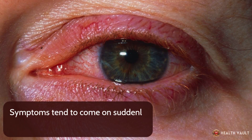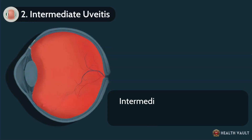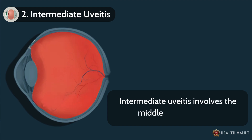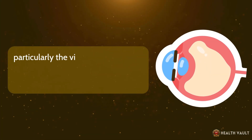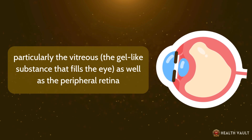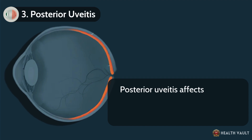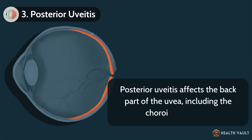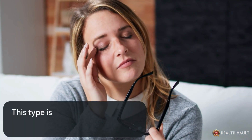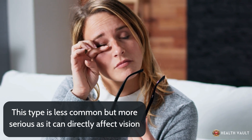Symptoms tend to come on suddenly and can persist for a few weeks. Intermediate uveitis involves the middle part of the eye, particularly the vitreous — the gel-like substance that fills the eye — as well as the peripheral retina. Posterior uveitis affects the back part of the uvea, including the choroid and retina. This type is less common but more serious, as it can directly affect vision.